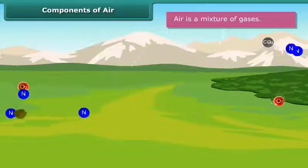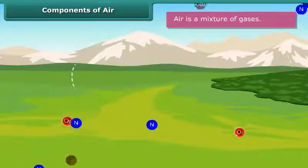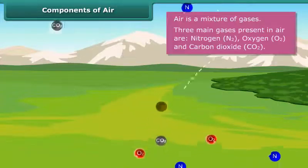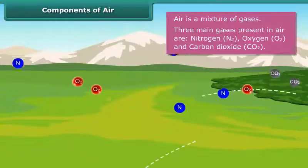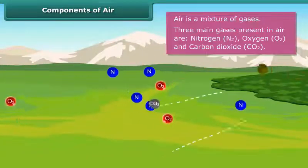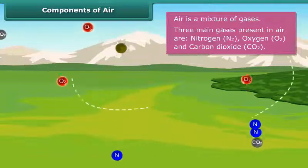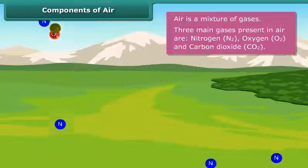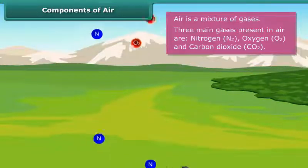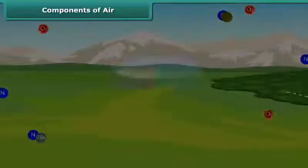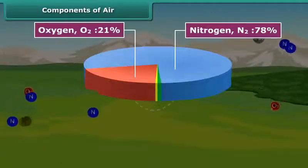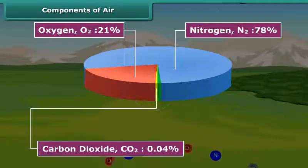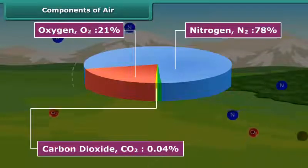Air is a mixture of gases. Three main gases present in air are Nitrogen (N), Oxygen (O), and Carbon Dioxide (CO2). Nitrogen forms 78%, Oxygen 21%, and Carbon Dioxide 0.04% of the air.